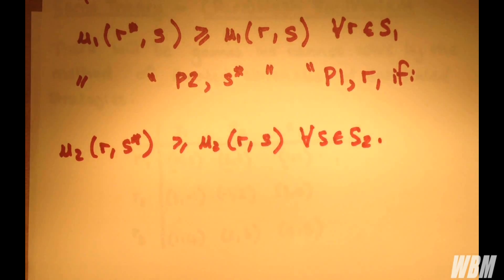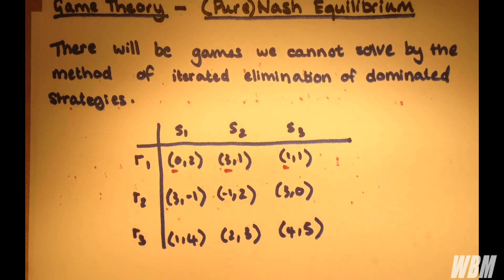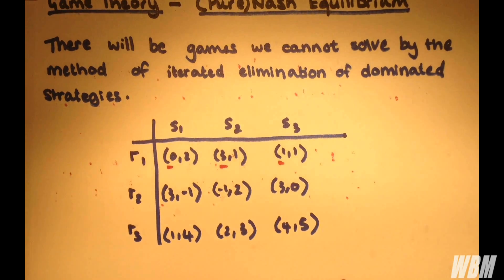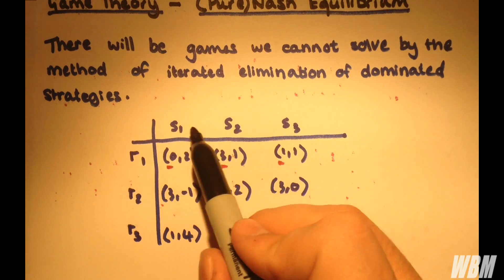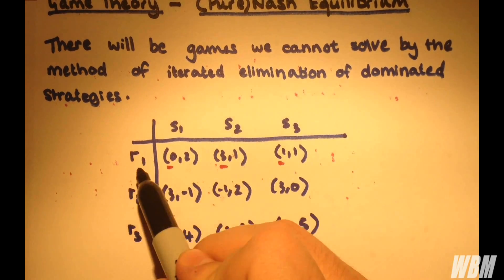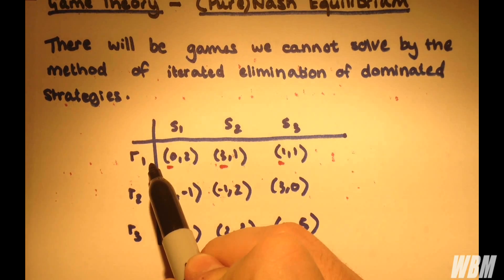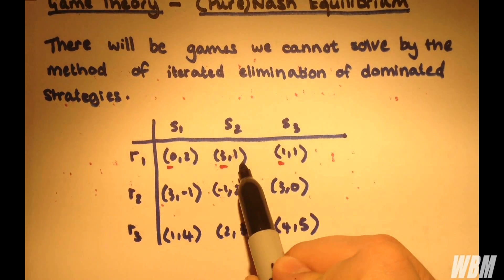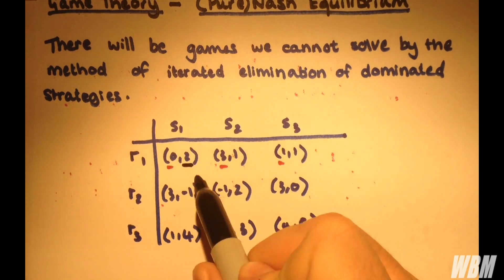So how do we use this to find a Nash Equilibria? So we're basically going back to our original matrix, and I'll use a different colour pen. I'll use black here. So let's see how to use this to find a Nash Equilibrium. So the best response for player 2 here, for a fixed strategy R1, is S1, because we have 2, 1, and 1, and the biggest one is 2.